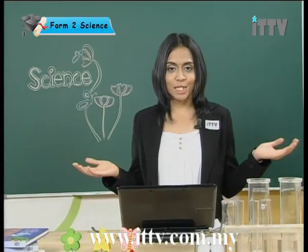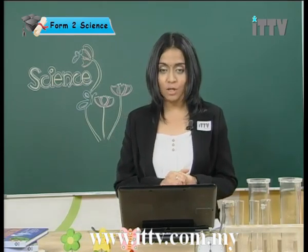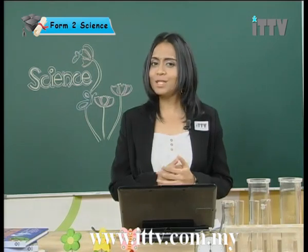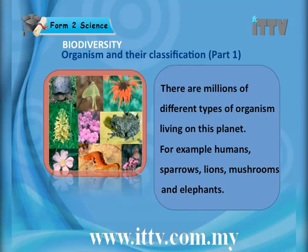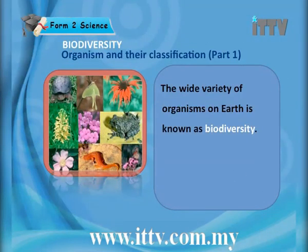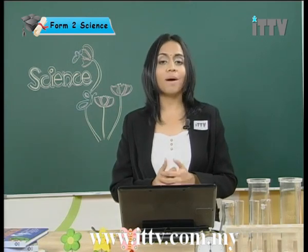What is biodiversity? Biodiversity is short for biological diversity. The proper definition: there are millions of different types of organisms living on this planet — for example, humans, sparrows, lions, mushrooms and elephants. The wide variety of organisms on earth is known as biodiversity. This is the definition of biological diversity.